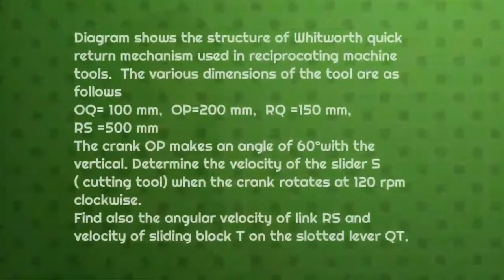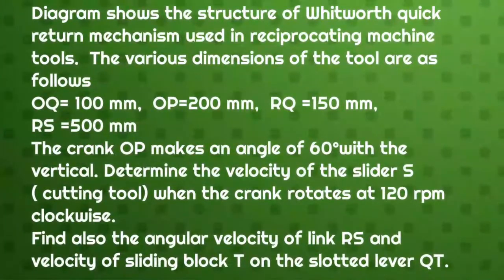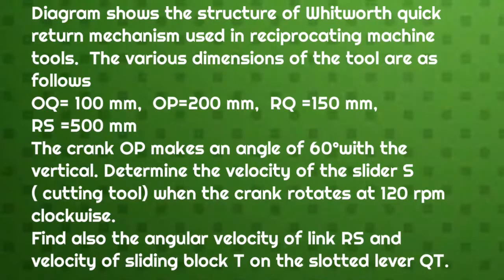Now first I will read the given problem. The diagram shows the structure of the Whitworth quick return mechanism used in reciprocating machine tools. The various dimensions are as follows: OQ = 100 mm, OP = 200 mm, RQ = 150 mm, and RS = 500 mm. The crank OP makes an angle of 60 degrees with the vertical. Determine the velocity of slider S (cutting tool) when the crank rotates at 120 rpm clockwise.